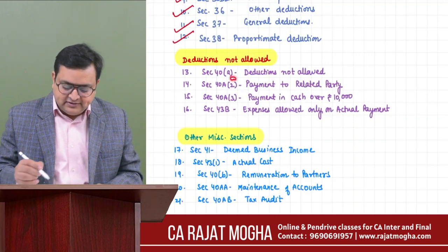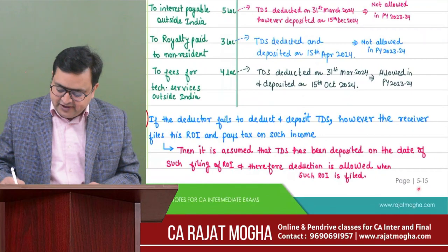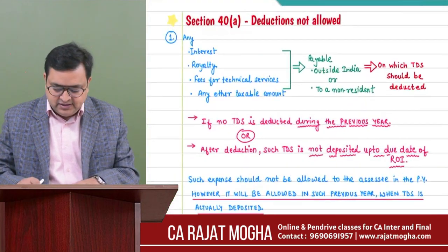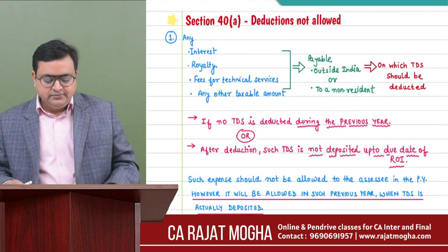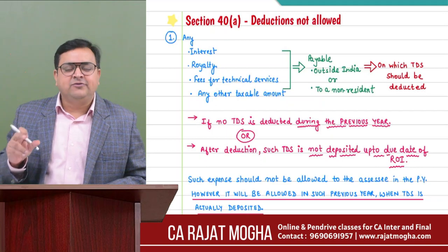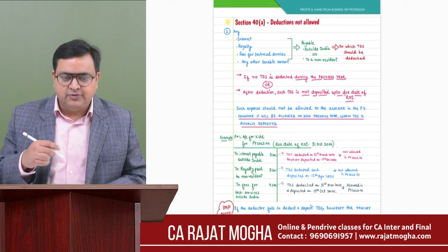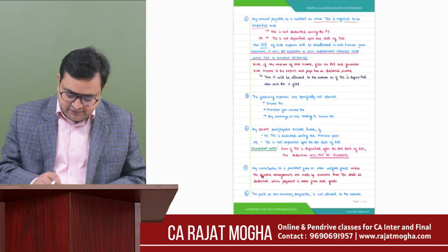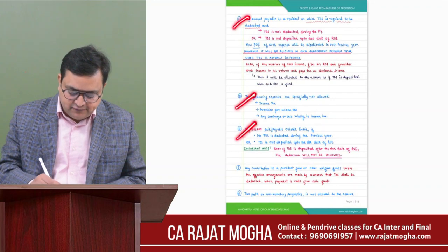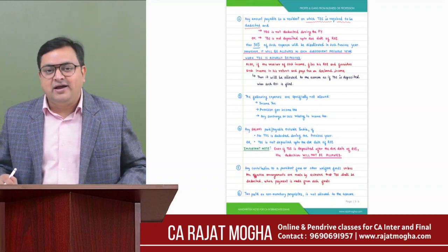Section 40(a) — if you come to your book, this is page number 5.15 (available for download from the website in the description). Section 40(a) has a list of expenses which are not allowed. Going through each one: first, second, third, fourth, fifth, sixth — it has certain listed expenses which are not allowed under PGBP.